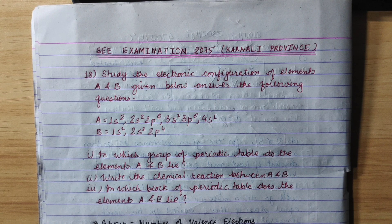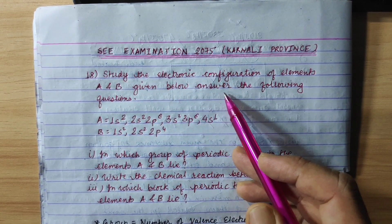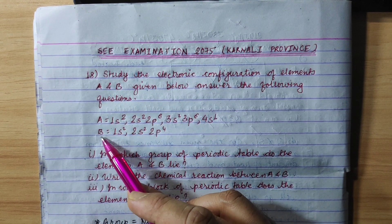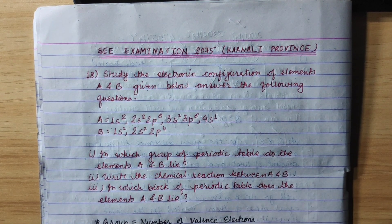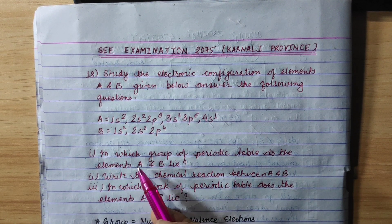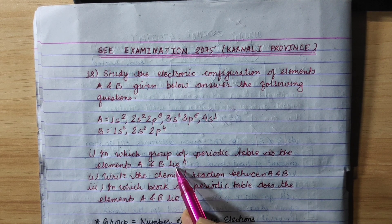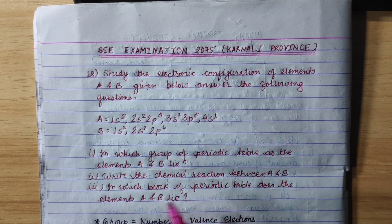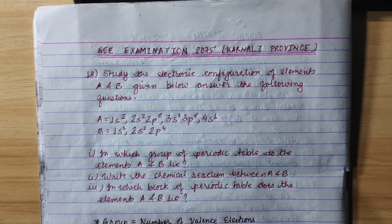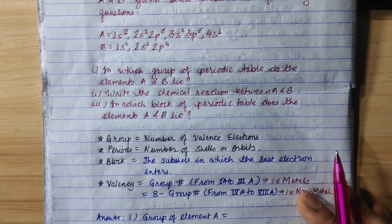Study the electronic configuration of elements A and B given below and answer the following questions: In which group of the periodic table do the elements A and B lie? Write the chemical reaction between A and B. In which block of the periodic table do the elements A and B lie?